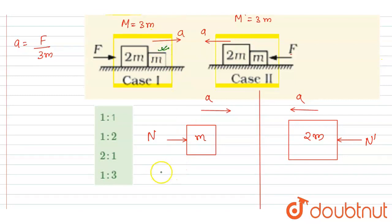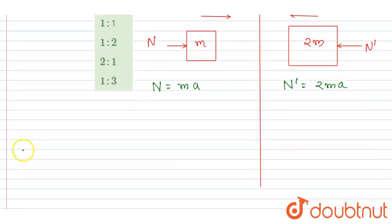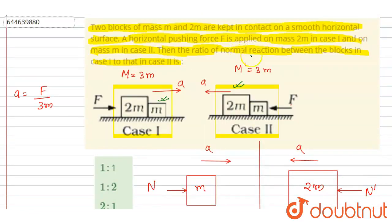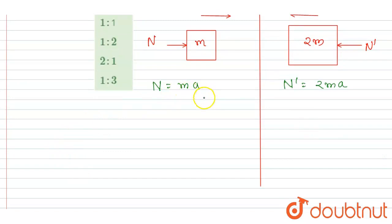this is small m, it will equal mass times acceleration. So net force is N, mass is m, acceleration is a. Now net force on this towards left, so I will write N dash equals 2ma. Now you can divide them to get the ratio. If you've seen the question, we want the normal reaction ratio in case 1 to case 2. In case 1 it is ma, in case 2 it is 2ma, and a here is same, it is F by 3m in both cases.